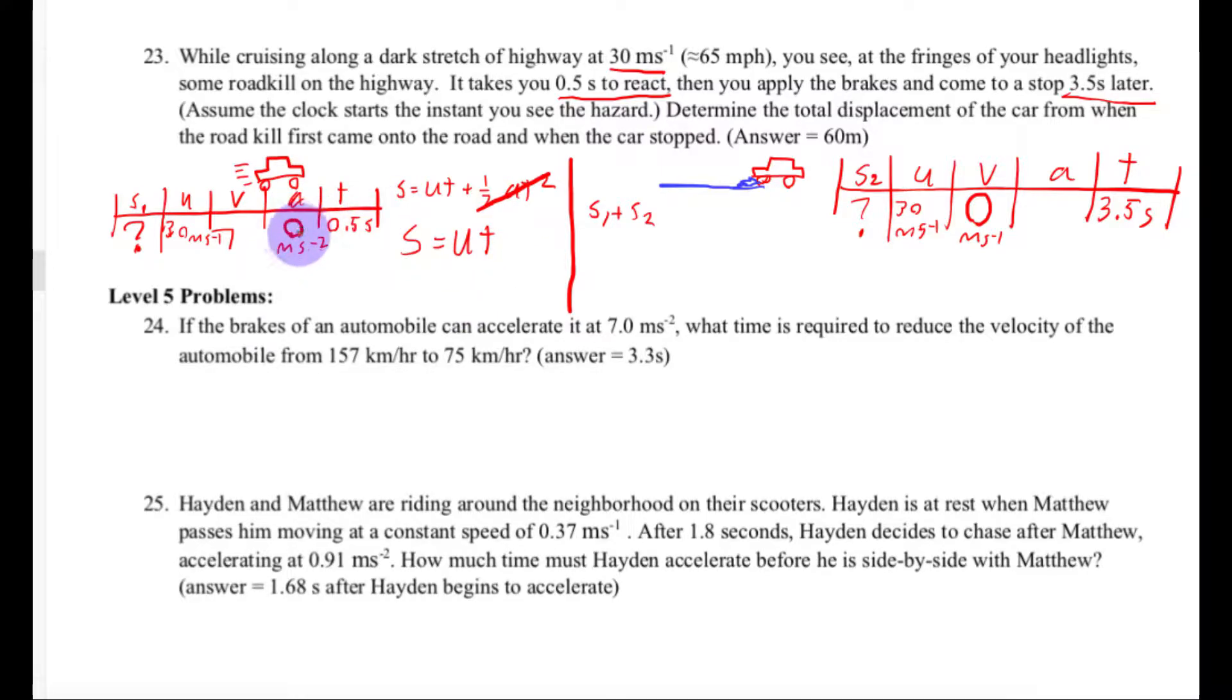Because if you have zero acceleration, that means that you have constant velocity. So this equation for displacement, velocity times time, works because this only works when you have a constant velocity, and because there's no acceleration, we do have a constant velocity.